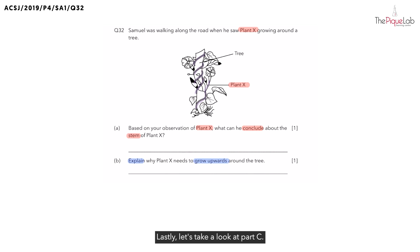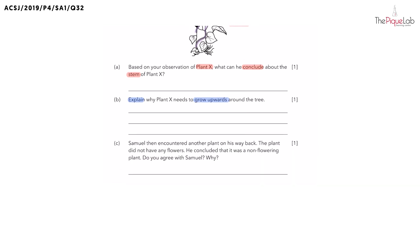Lastly, let's take a look at part C. So, for part C, Samuel said he encountered another plant on his way back, and this plant did not have any flowers at all. As such, he concluded that it must have been a non-flowering plant. Now, do you agree with Samuel? And why? So, just because we see a plant without any flowers, does it mean for sure it must be a non-flowering plant?